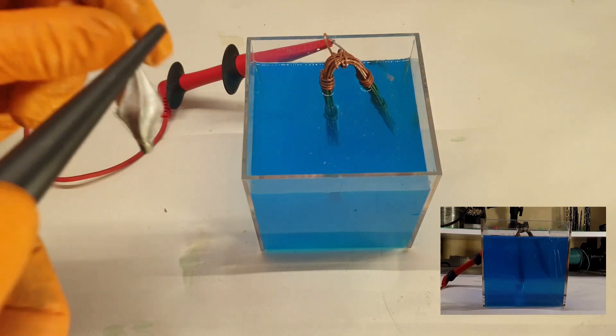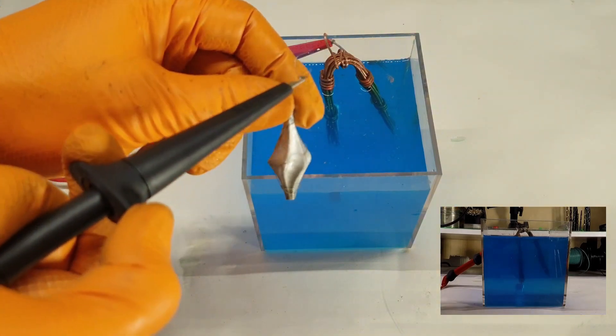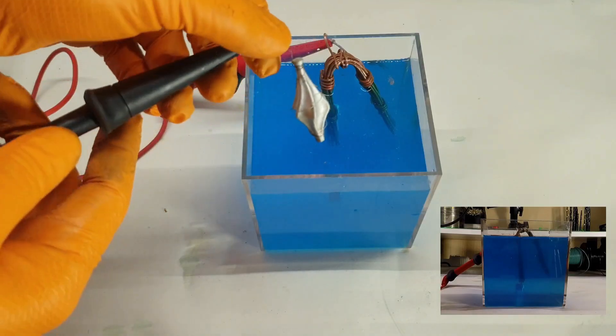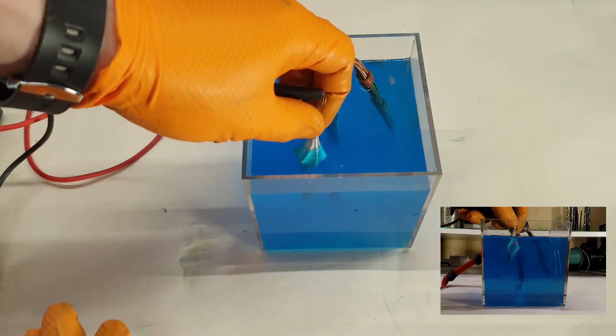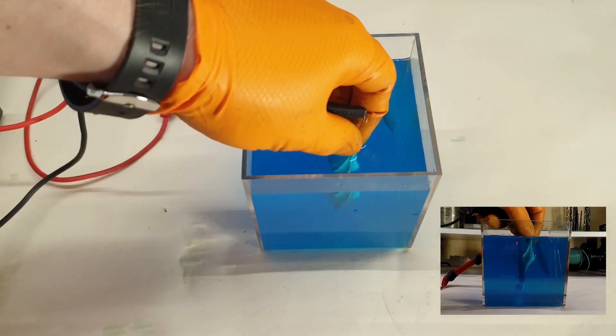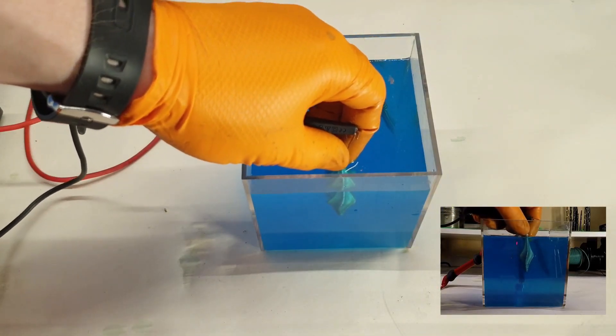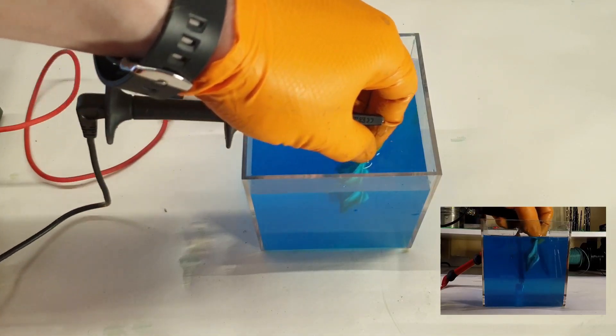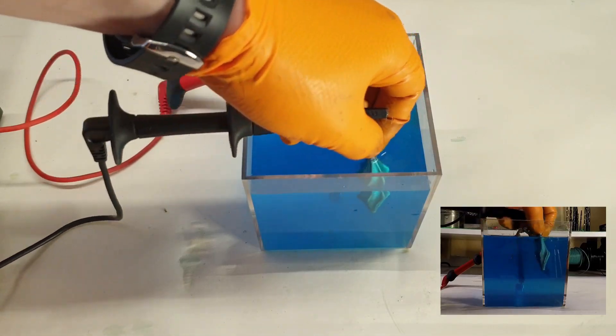Submerge the printed part in the electrolyte solution and keep moving it constantly. Checking your part periodically, you should start to see bright pink copper forming on your part in less than a minute. If you start getting dark patches or burnt patches on your part, either decrease your power supply's voltage or move the part further away from the scrap copper.